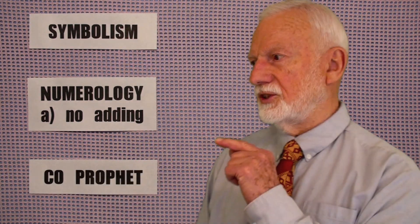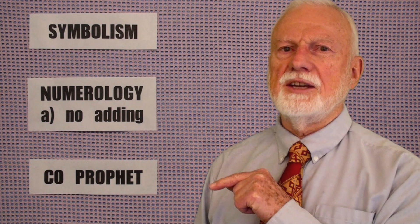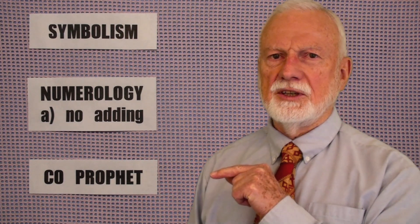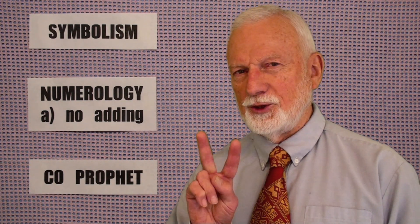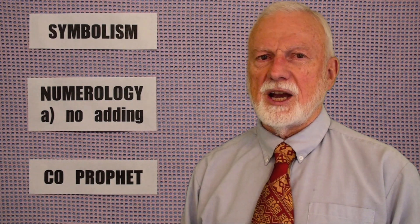And the third rule, which is always enforced, is that you need a co-prophet to understand end times Bible prophecy. That's because end times prophecy is a work of the Holy Spirit and the Holy Spirit always requires 2 people, very much the same as speaking in tongues. As Paul says, speaking in tongues has no edification for the Church unless someone interprets. In other words, it takes 2 people.